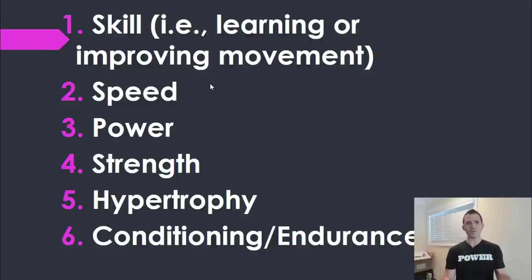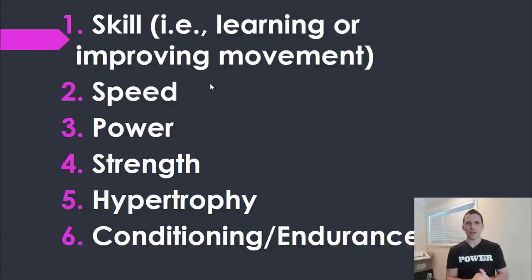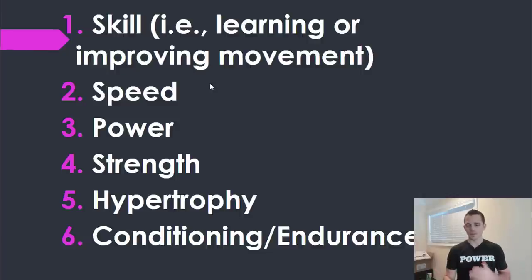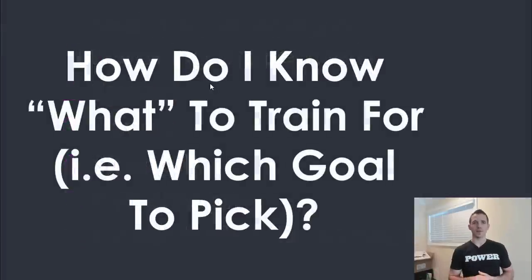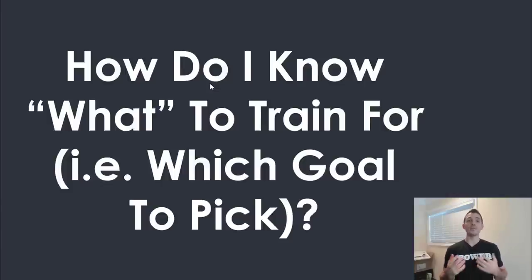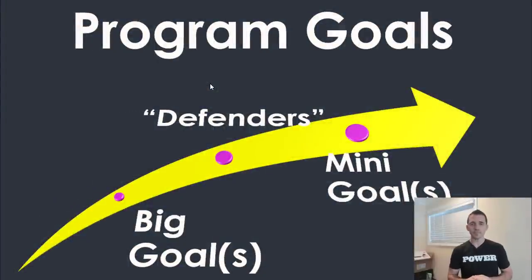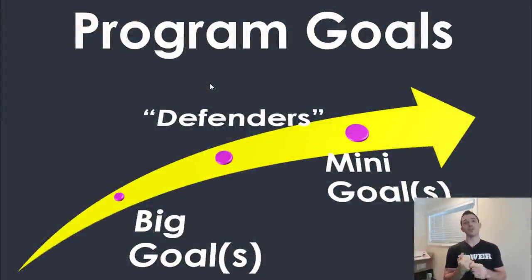So I have those six things I can work on. You could lump mobility and flexibility in here as prerequisites for doing these things correctly. So how do I actually know what to train for — which of these six do I pick when I have a new client, athlete, or I'm figuring out what to do myself? Step number one is you have to define your goal.